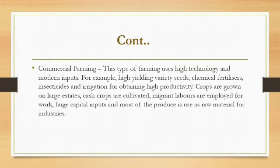Commercial farming uses high technology and modern inputs — for example, high-yielding variety seeds, chemical fertilizers, insecticides, and irrigation for obtaining high productivity. Crops are grown on large estates like plantations. Cash crops like tea, coffee, apples, bananas, and oranges are cultivated. Migrant laborers are employed, huge capital is invested, and most of the produce is used as raw material for industries — for example rubber, cotton, jute, and sugarcane.